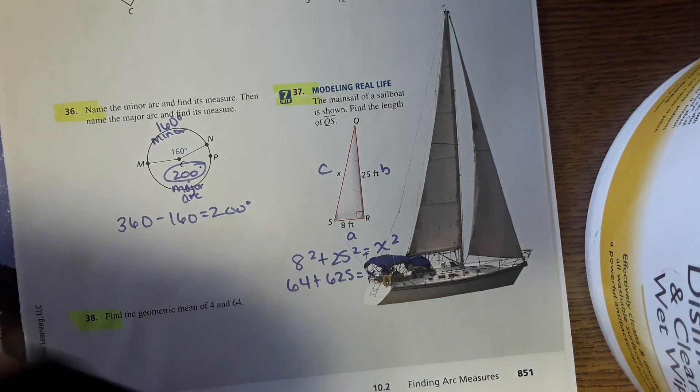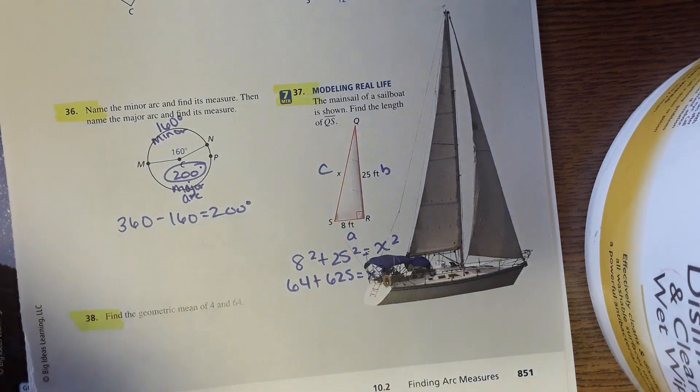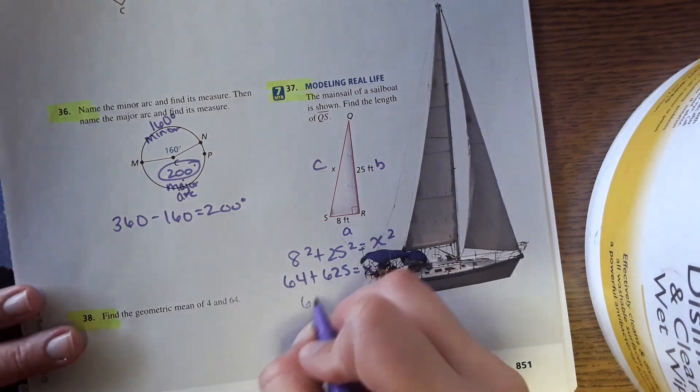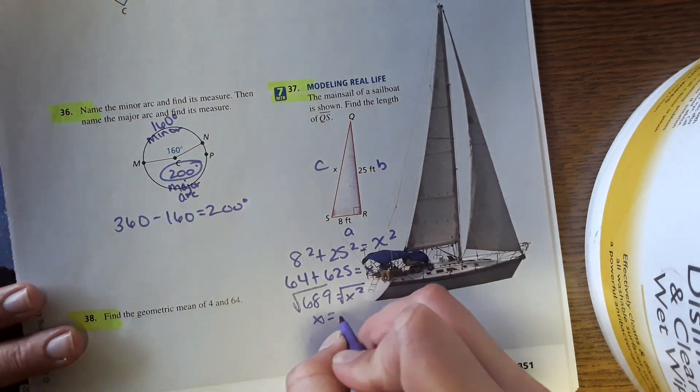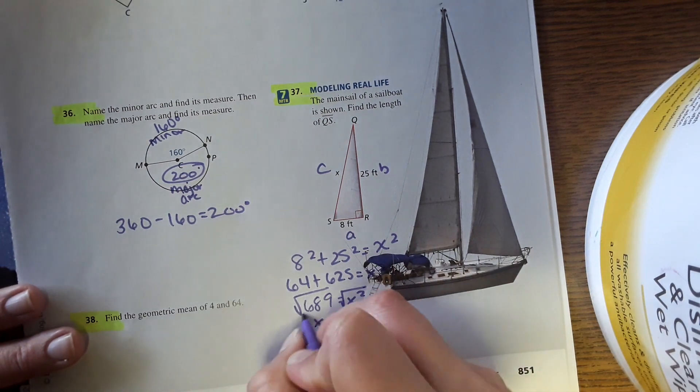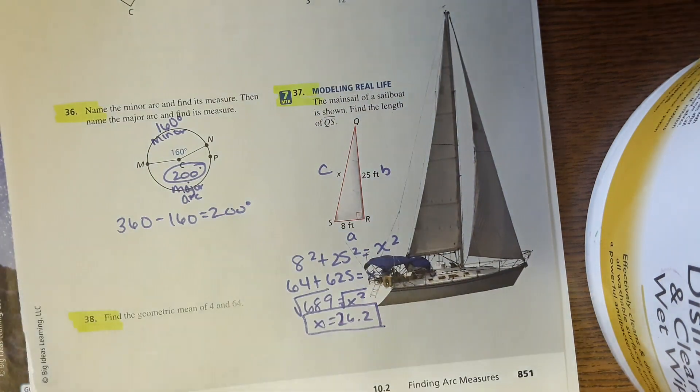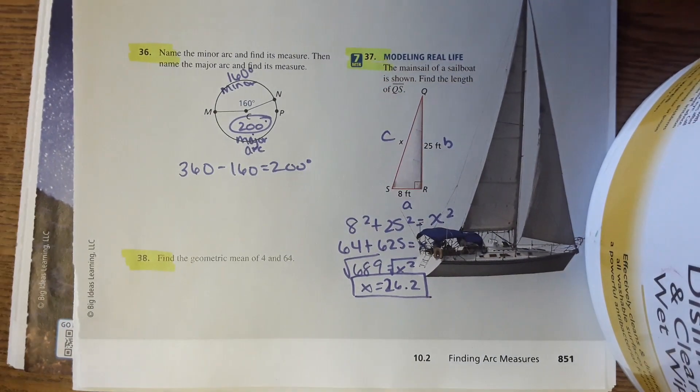64 plus 625 is 689, and x equals, wait not 17, 26.2. Then number 38, find the geometric mean.